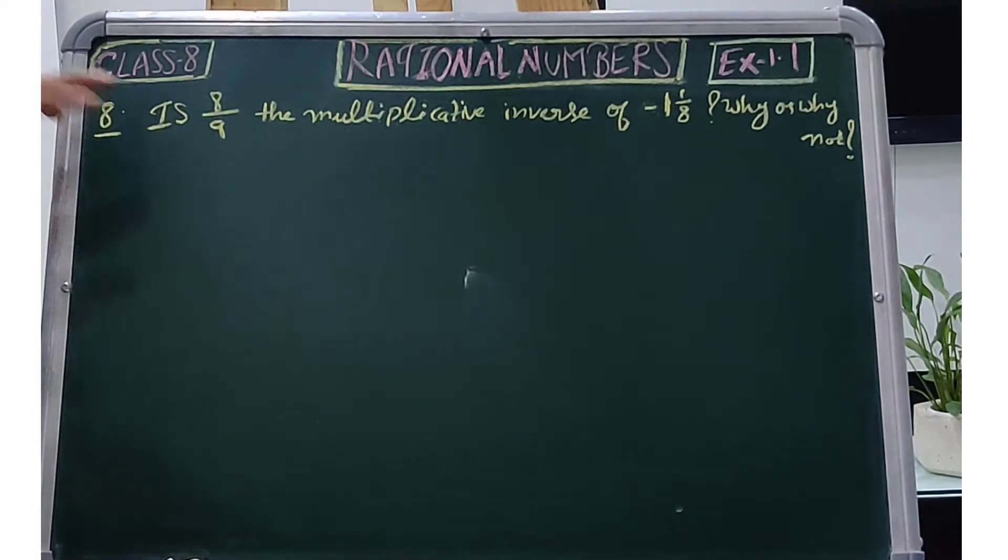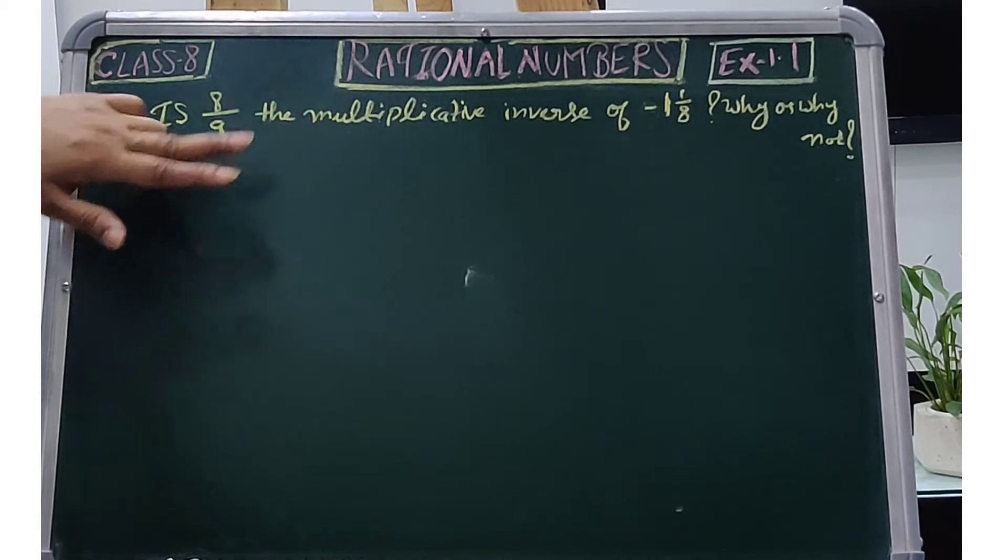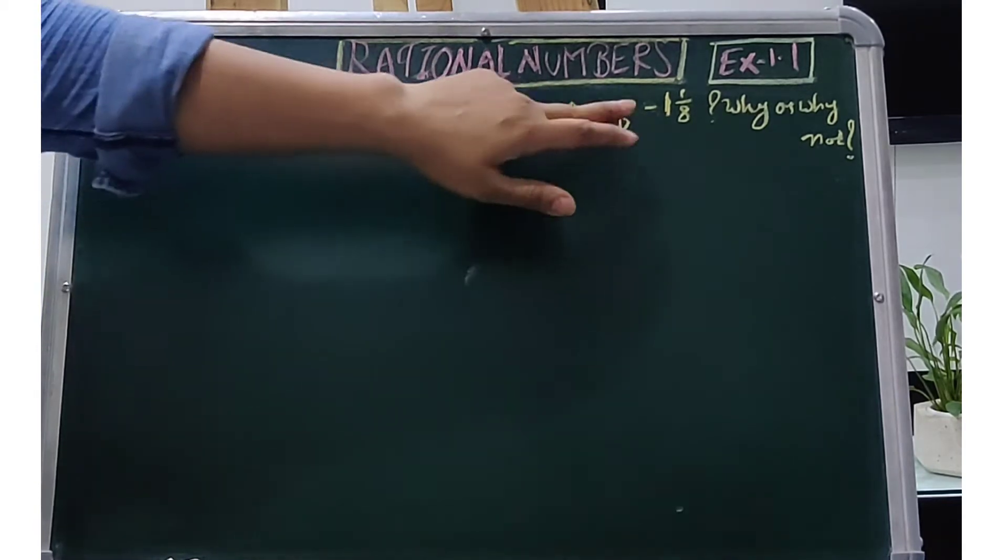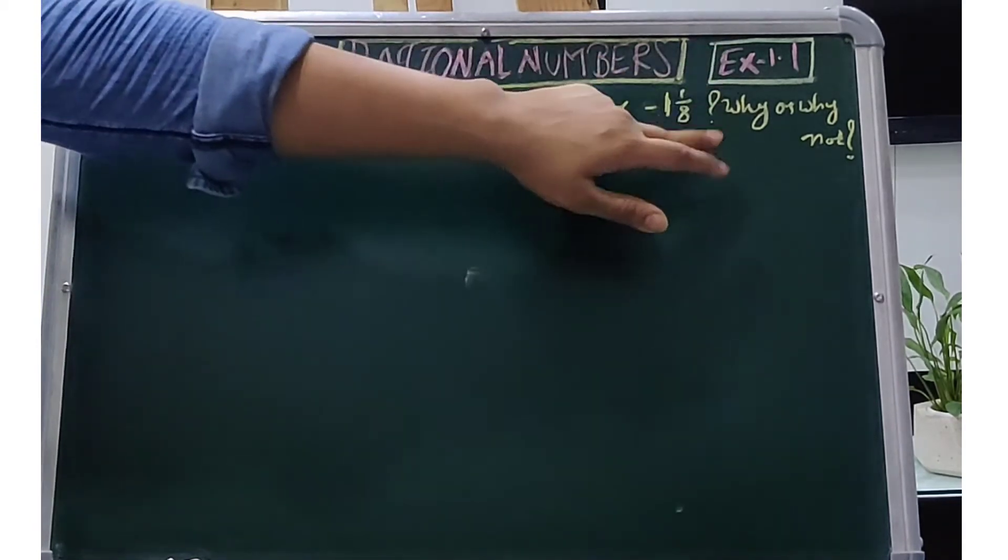According to this question: is 8/9 the multiplicative inverse of -1 1/8? Why or why not?